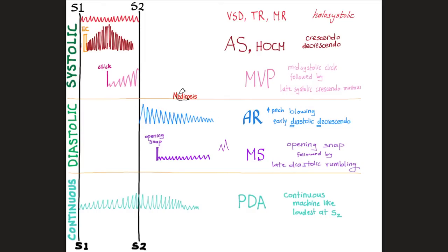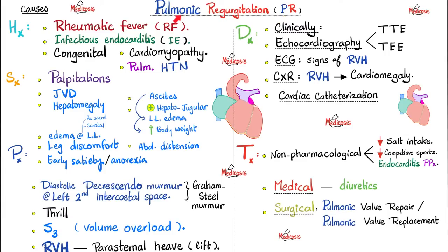Diastolic murmurs start after S2. What causes pulmonic regurgitation? It could be from rheumatic fever, infective endocarditis, congenital causes, or after cardiomyopathy or pulmonary hypertension.